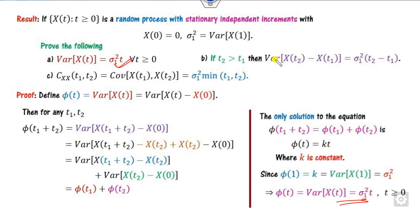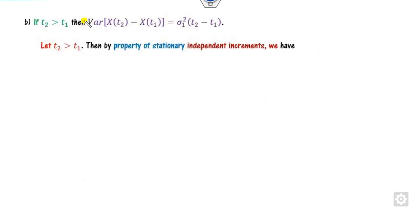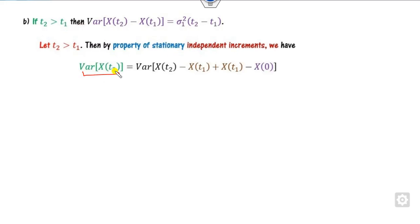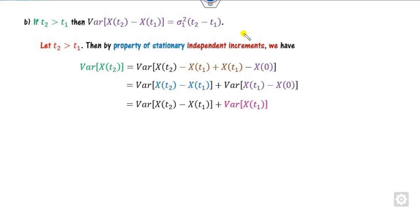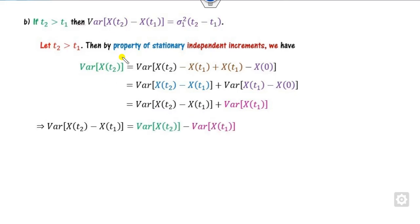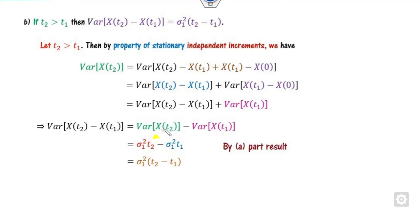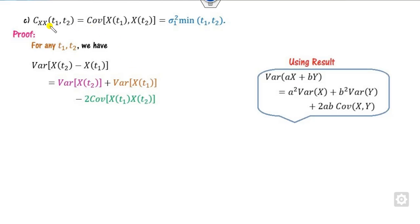For the second part, with t₂ > t₁: write Var(X(t₂)) = Var((X(t₂) − X(t₁)) + X(t₁)). Since the increments are independent, Var(X(t₂)) = Var(X(t₂) − X(t₁)) + Var(X(t₁)). Using the first part, Var(X(t₁)) = σ₁²·t₁ and Var(X(t₂)) = σ₁²·t₂. Therefore Var(X(t₂) − X(t₁)) = σ₁²·t₂ − σ₁²·t₁ = σ₁²(t₂ − t₁). This is the required proof for part two.